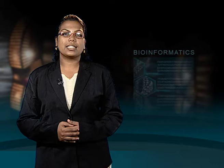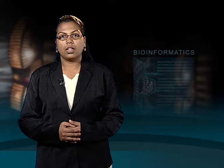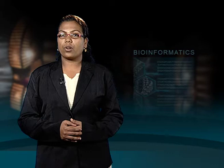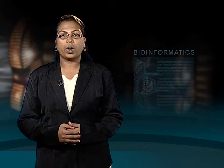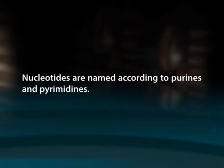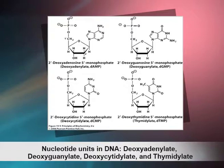Nucleotides are phosphate esters of nucleosides. Phosphoric acid is bound to the CH₂OH group of the sugar by an ester bond. The most common site of esterification in naturally occurring nucleotides is the hydroxyl group attached to C5 of the sugar. The first carbon atom of the sugar (ribose or deoxyribose) is attached to the nitrogen at position 9 of a purine (N9) or at position 1 of a pyrimidine (N1). The four nucleotide units in DNA are called deoxyadenylate, deoxyguanylate, deoxycytidylate, and thymidylate.